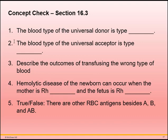True or false: there are other red blood cell antigens besides A, B, and AB? True — there are many red blood cell antigens besides A and B; these are just the most common and the ones that cause the most serious transfusion reactions, but other red blood cell antigens do exist.